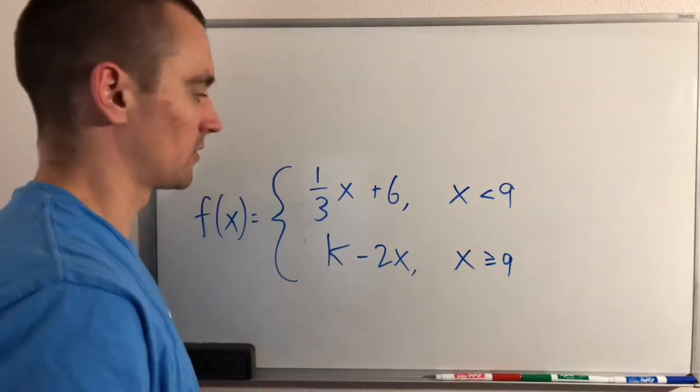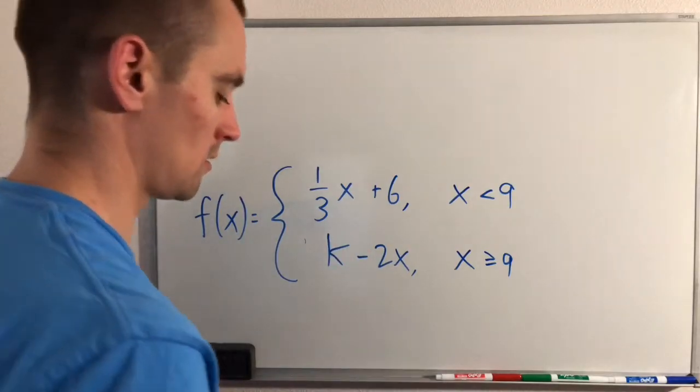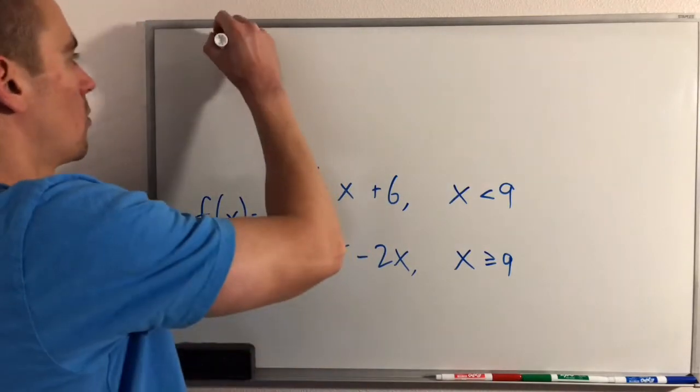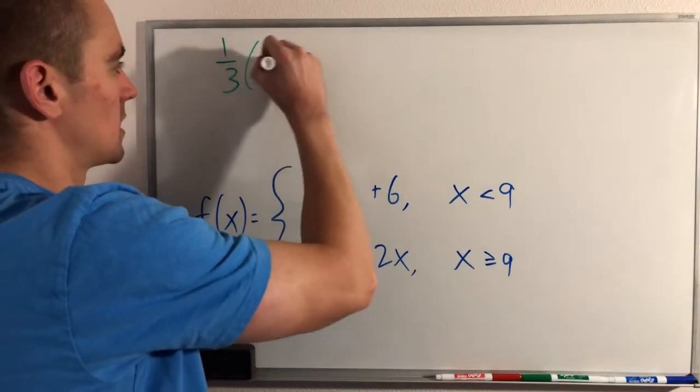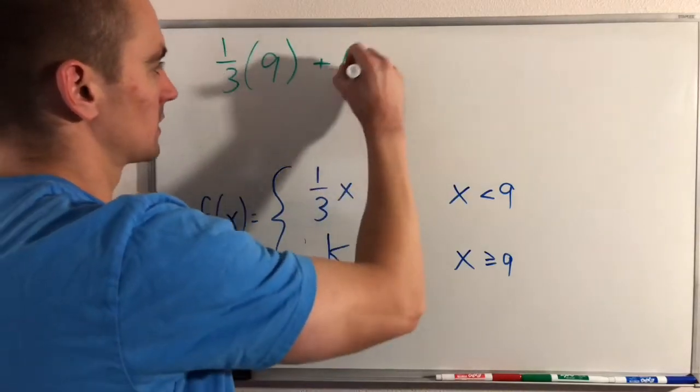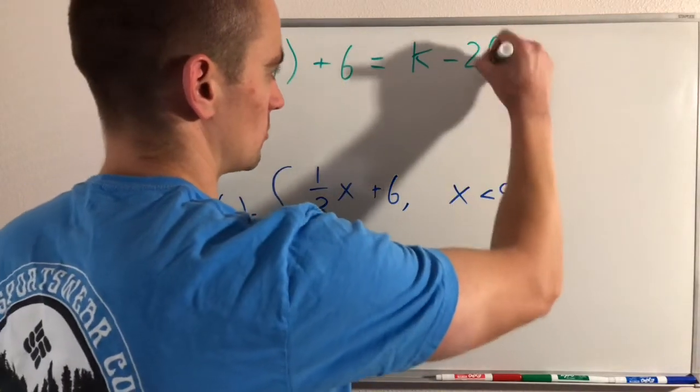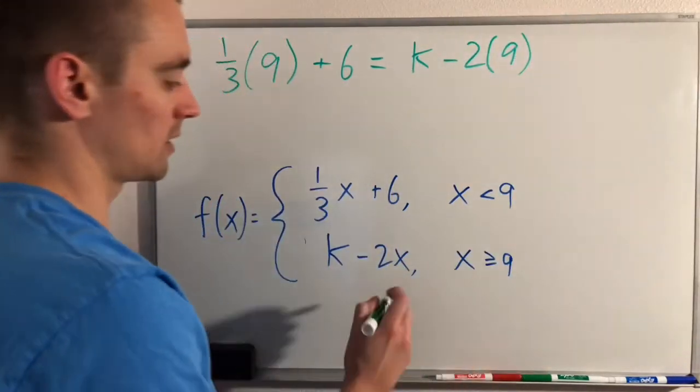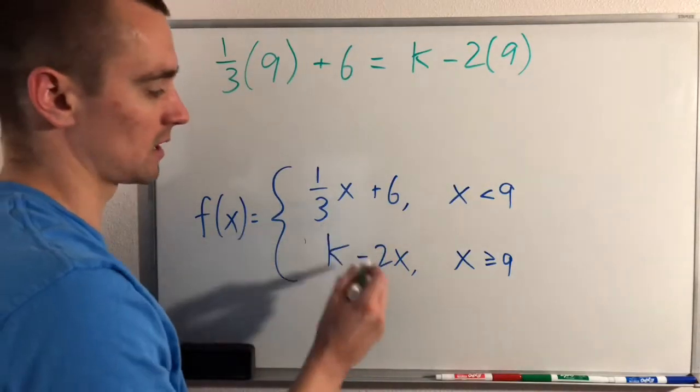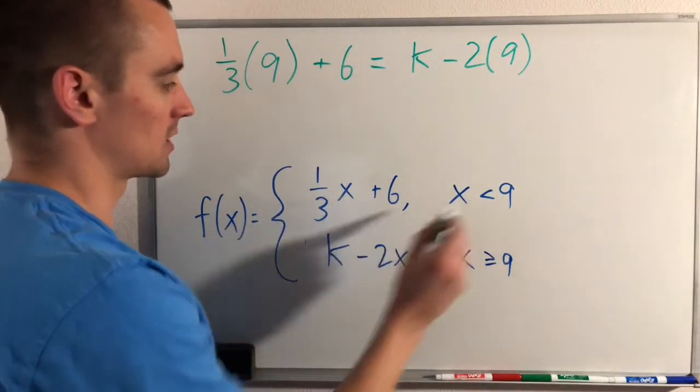Doing that for this first function, we're going to get one-third times 9 plus 6, and we need to make sure that equals k minus 2 times 9. All we did was go to each of these functions and replace our x with 9.